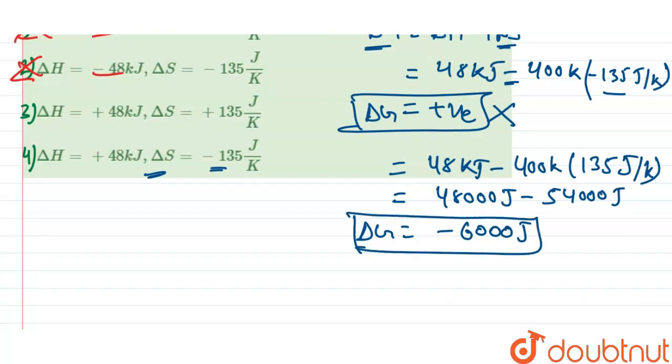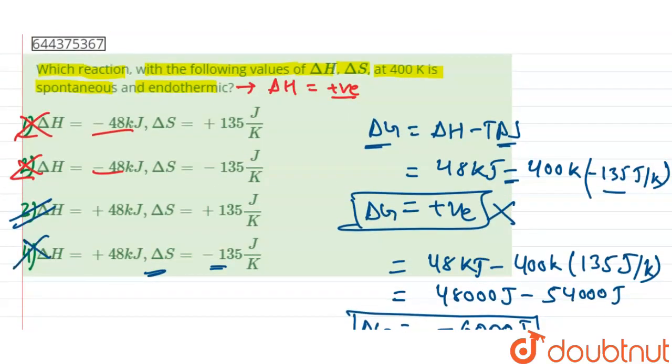So which is a negative value. Hence in option number three, conditions give the spontaneous reaction and also endothermic. So option number three is correct, and all other options are incorrect.